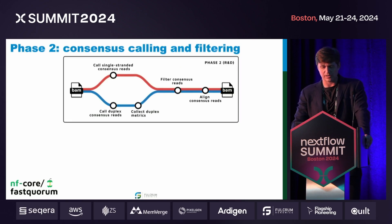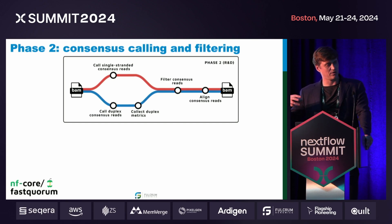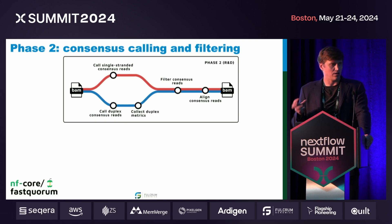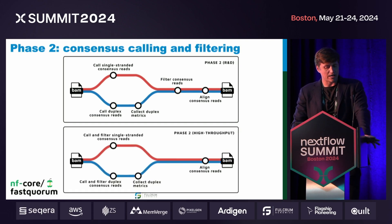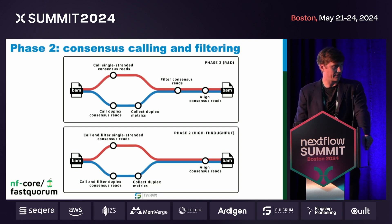With that grouped BAM, we go through consensus calling — the process where we look across those reads and squash the error. The first step is to consensus call the reads, then align them to the genome, and then filter based on read-level or base-level properties like minimum coverage. There is an R&D version of this phase that allows users to test various filtering and consensus calling parameters, since there are a lot of different assumptions in the probabilistic models. There's also a high-throughput version where performance and throughput take precedence: it calls consensus and filters at the same time, then aligns the reads, reducing intermediate data.